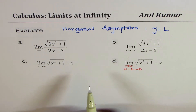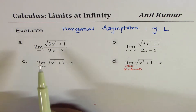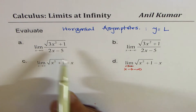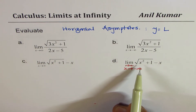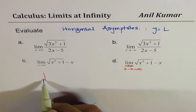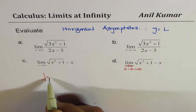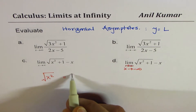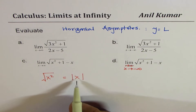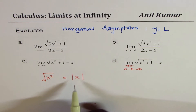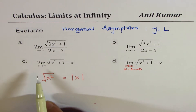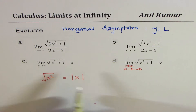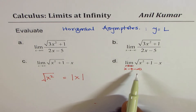Let's talk about a few strategies. When we solve these kinds of questions, every question has square root of x squared in it. The first thing to remember is that square root of x squared is the absolute value of x, not just x. That makes a huge difference when we calculate the limit approaching positive or negative infinity.